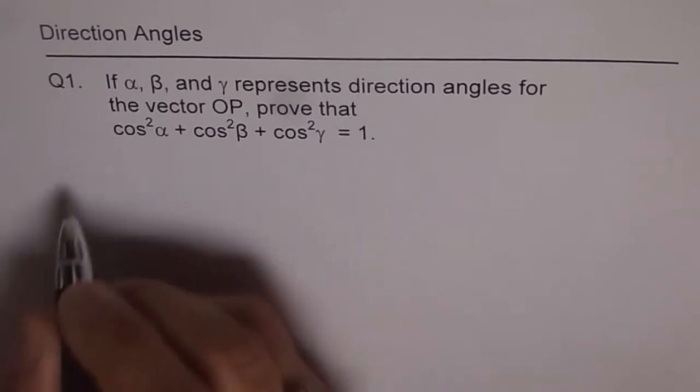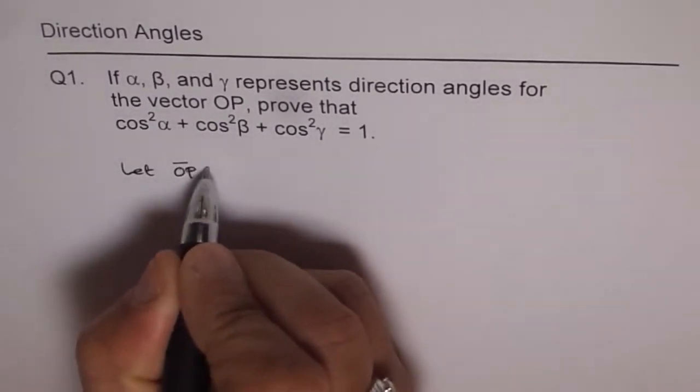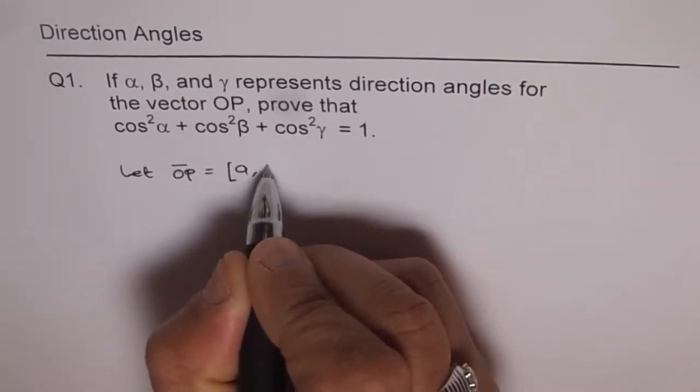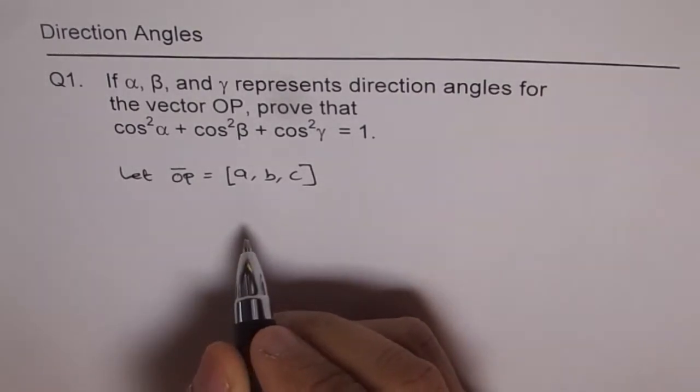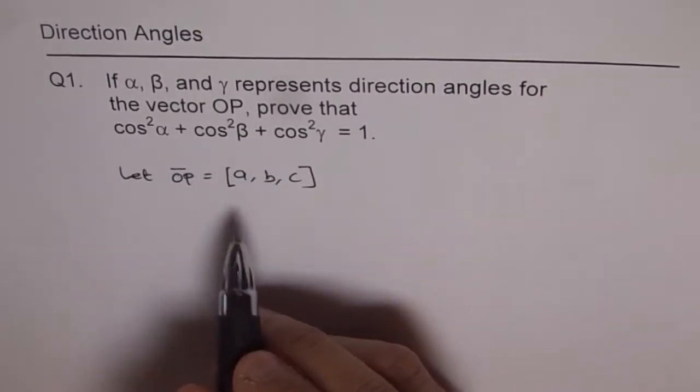Now let vector OP be, let's say, ABC. In that case, what is cos square alpha, what is cos square beta and what is cos square gamma?